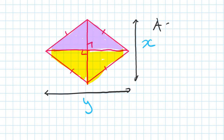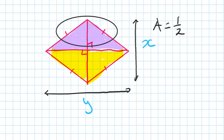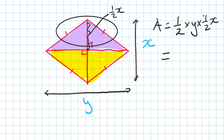So area of one triangle is again a half times base times height. The diagonal is x, so from the centre to one end is half of x. Base is y, so: a half times y times a half of x. A half times a half gives a quarter, so that means a quarter of xy.